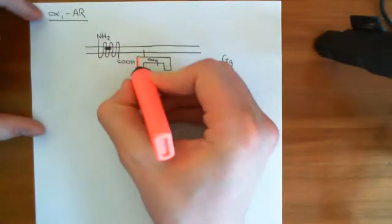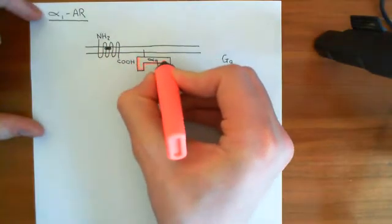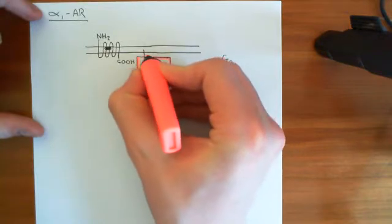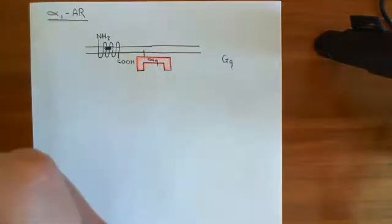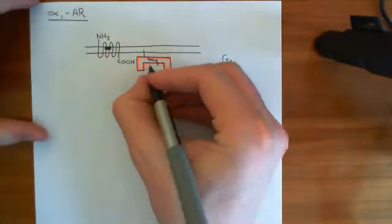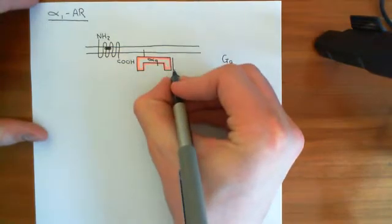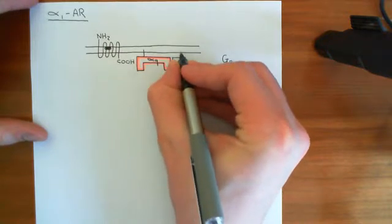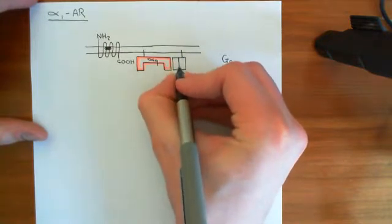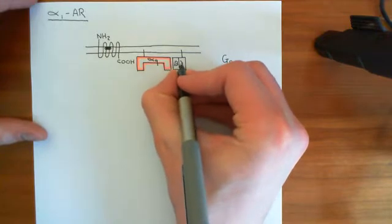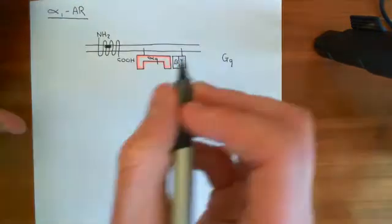I'll colour the alpha-Q subunit in red here. We don't know what the beta and gamma subunits are going to be, and for the basis of this pathway we don't really care. So I'll put the beta-gamma subunit here — beta in blue and gamma in green — but we're not going to worry about what they actually are.